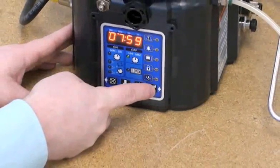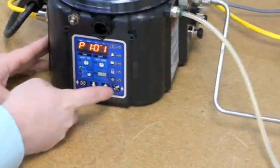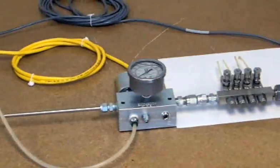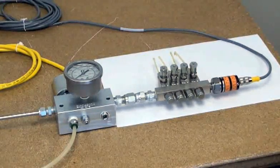I'm going to initiate a loop cycle by pressing the manual run button. So you can see the pump begins pumping, and it begins to develop pressure in the system.